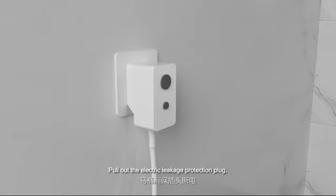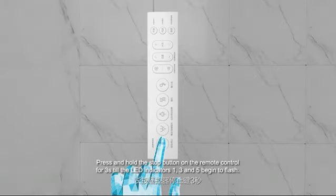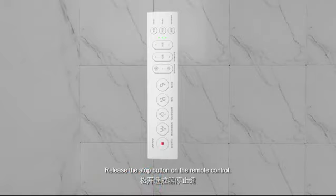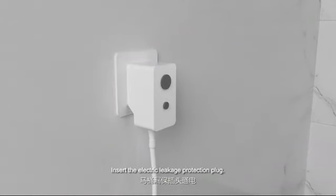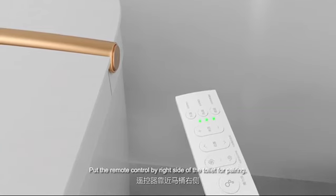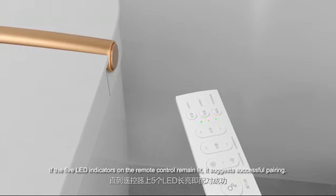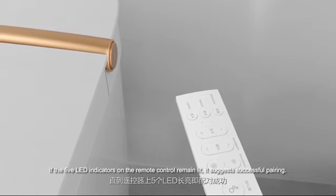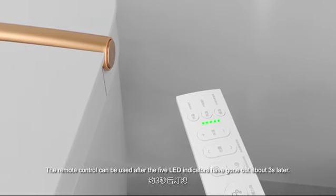Pull out the electric leakage protection plug. Press and hold the stop button on the remote control for 3 seconds till the LED indicators 1, 3, and 5 begin to flash. Release the stop button on the remote control. Insert the electric leakage protection plug. Put the remote control by right side of the toilet for pairing. If the five LED indicators on the remote control remain lit, it suggests successful pairing. The remote control can be used after the five LED indicators have gone out, about 3 seconds later.